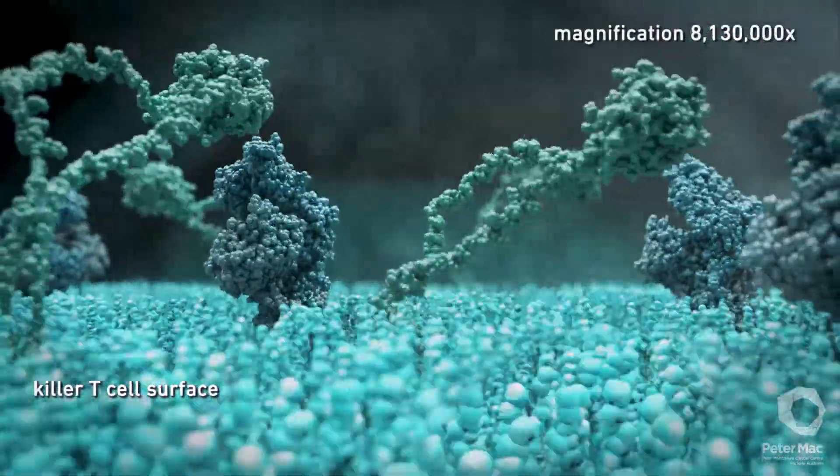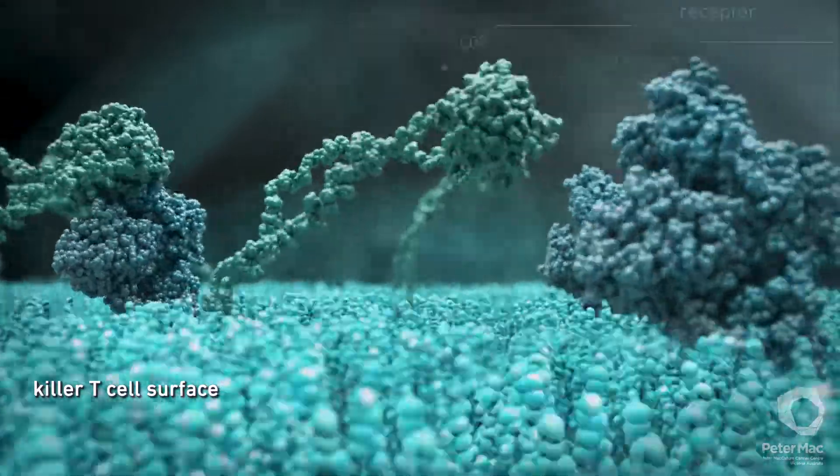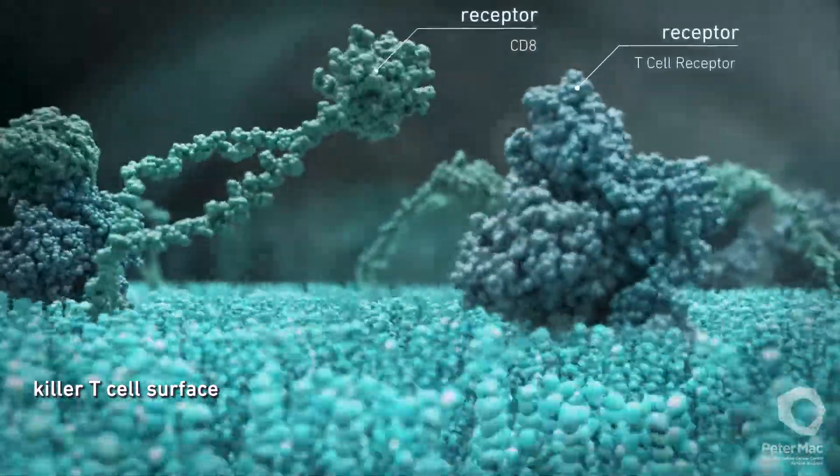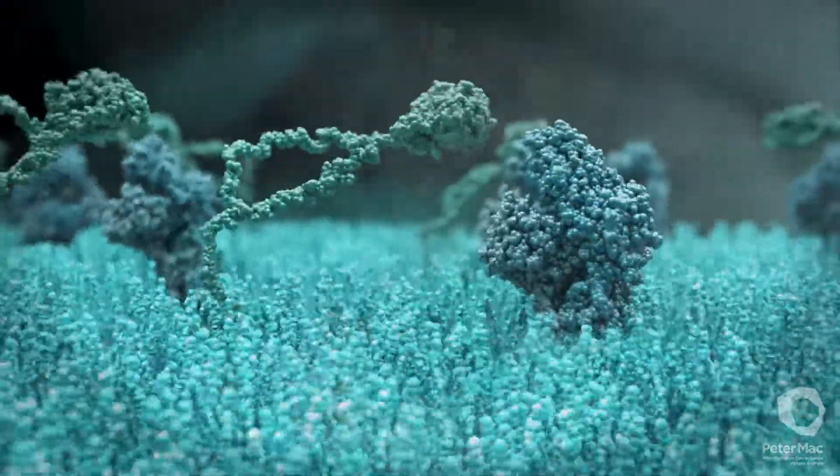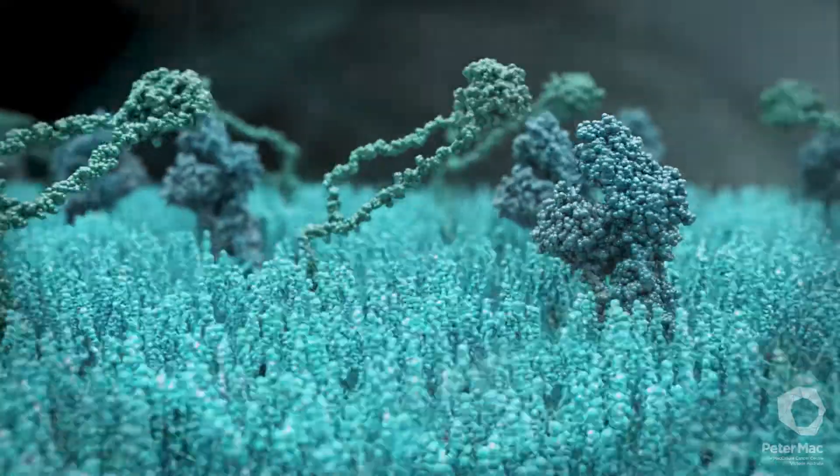We are now looking at the magnified surface of a killer T-cell. These cells have special receptors on their cell surface that can recognize and latch onto foreign particles on the surface of abnormal or infected cells.